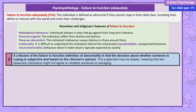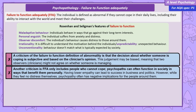One criticism of the failure to function definition of abnormality is that the decision about whether someone's coping or not is subjective and based on the opinion of observers. This means that two observers might not agree on whether someone's coping or not. Another issue is that the definition only includes people who are unable to cope, which excludes some people who would be considered abnormal, such as psychopaths. Psychopaths are often able to function in society in ways that make them successful, such as lower empathy which can make it easier to make decisions that are helpful in business and politics.